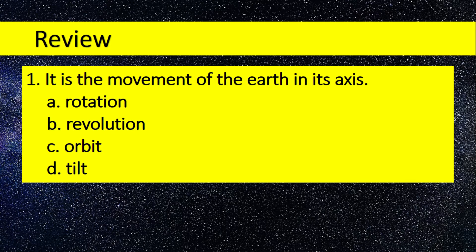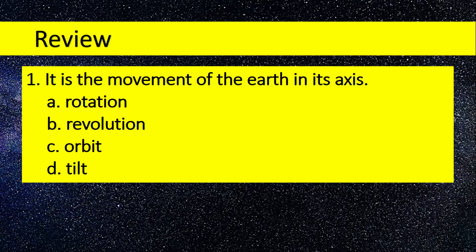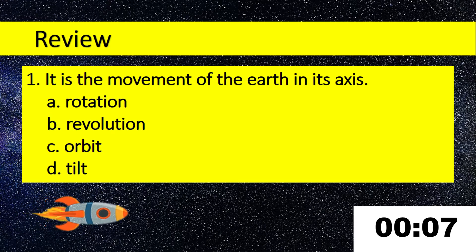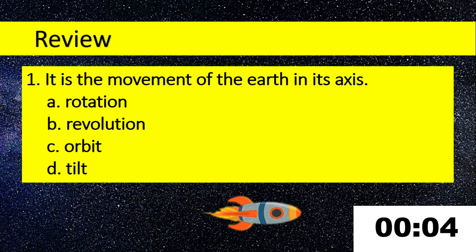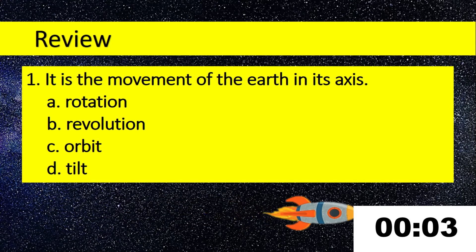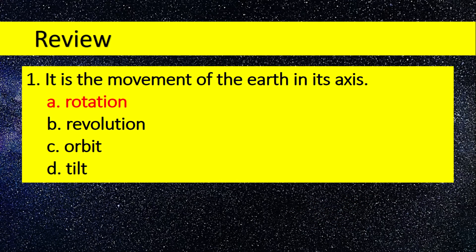Number 1. It is the movement of the Earth on its axis. A. Rotation, B. Revolution, C. Orbit, D. Tilt. Answer: Rotation.